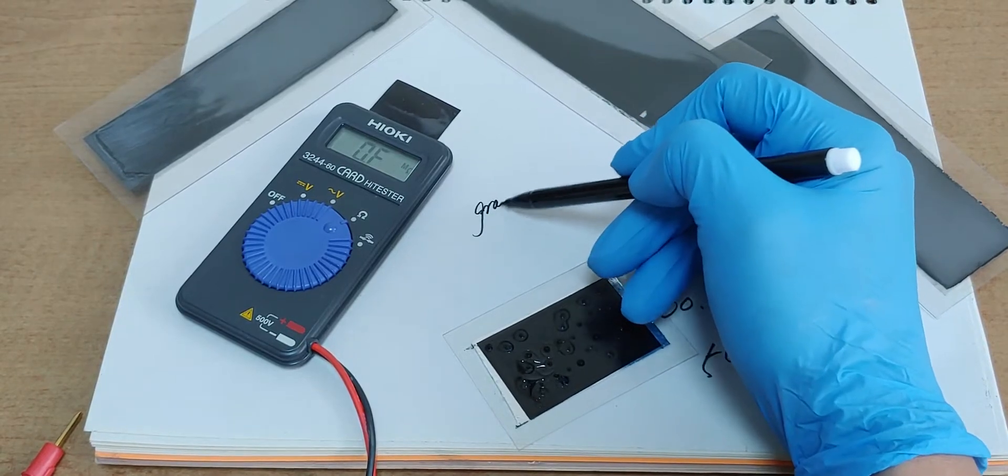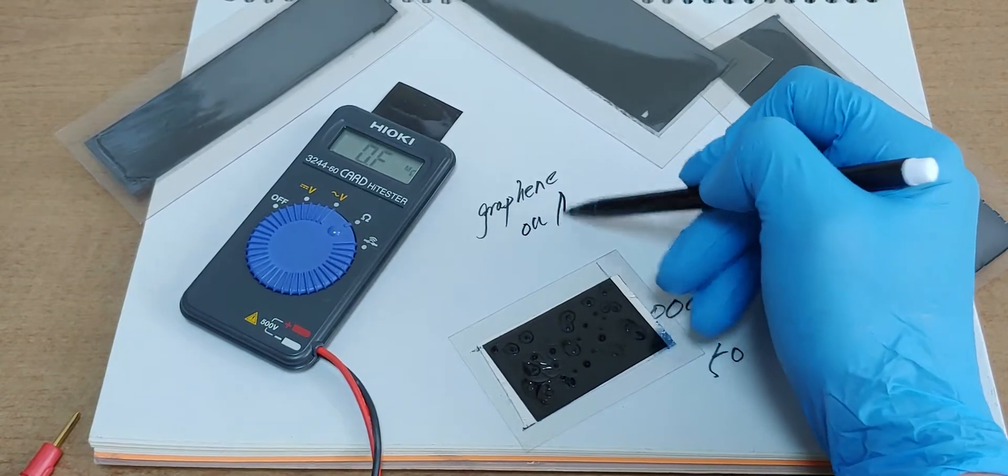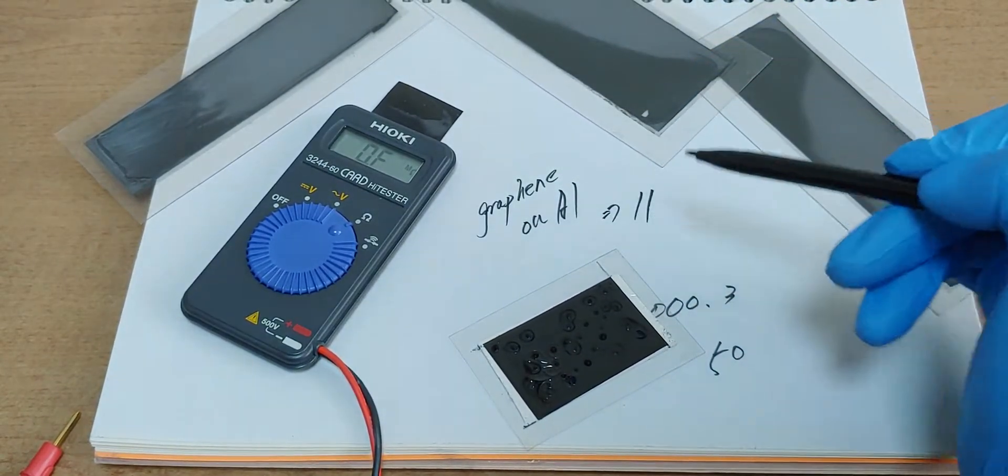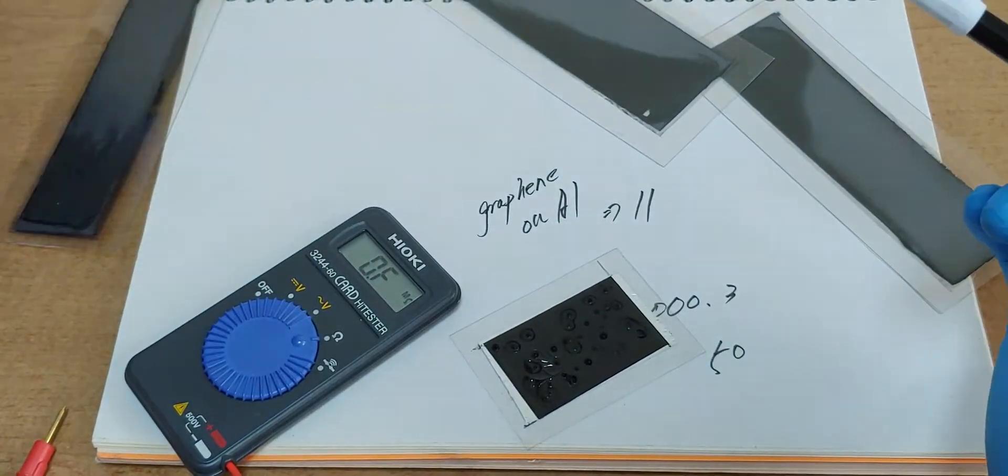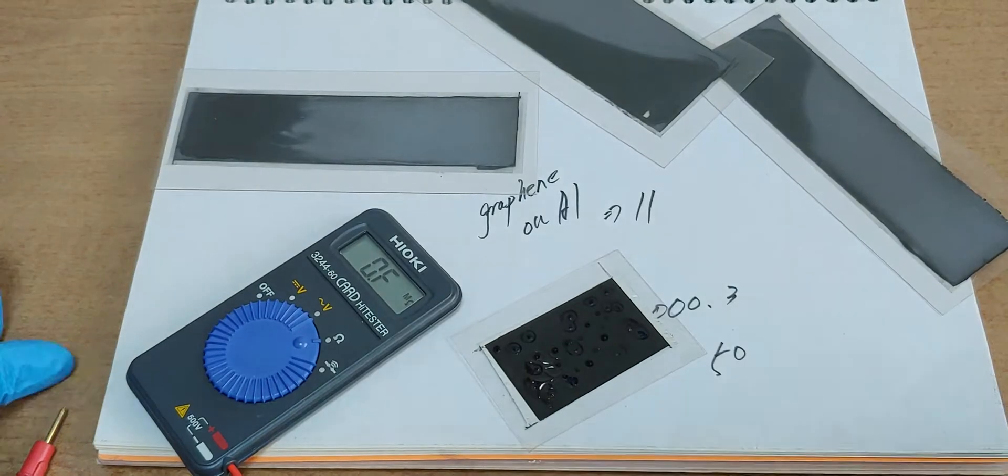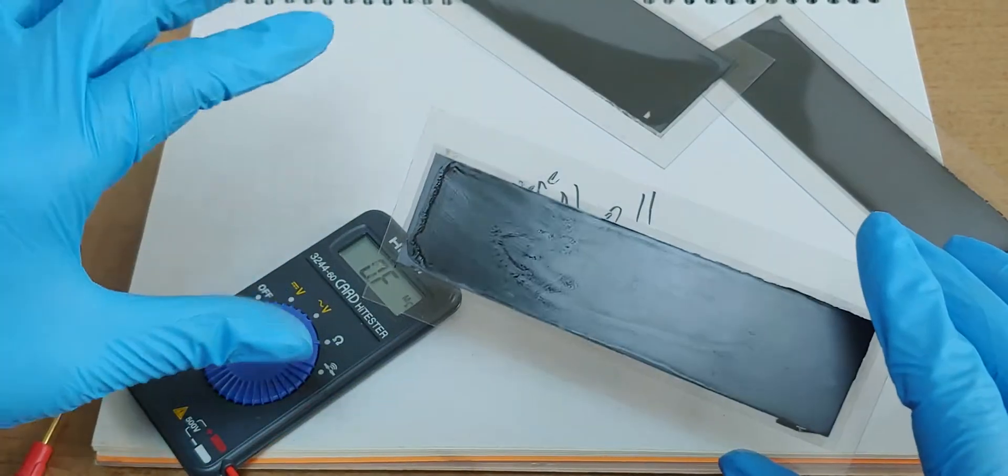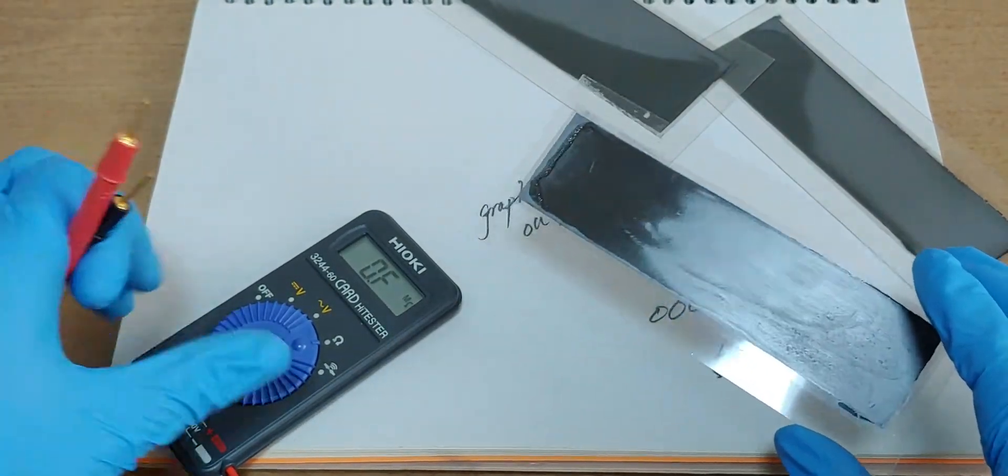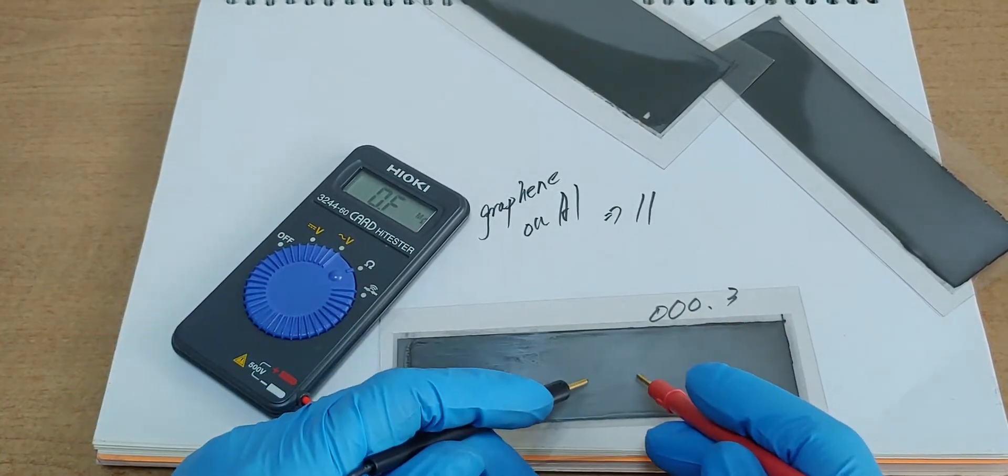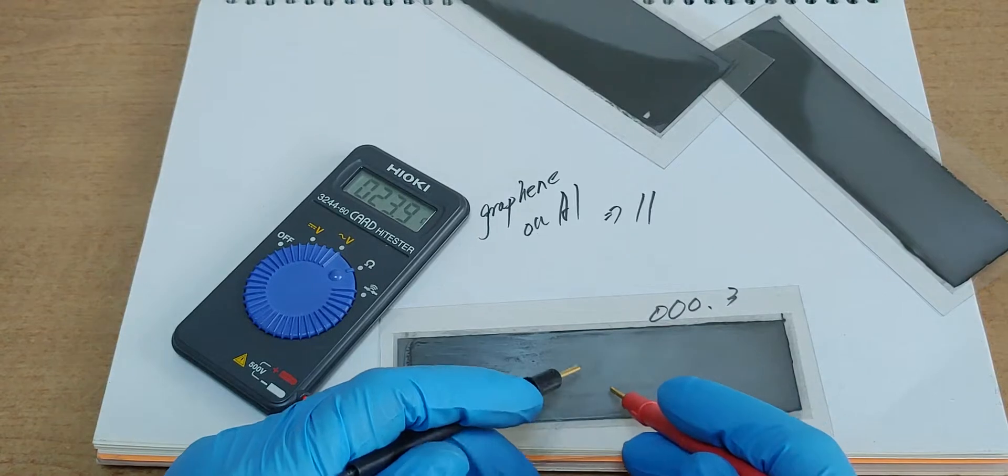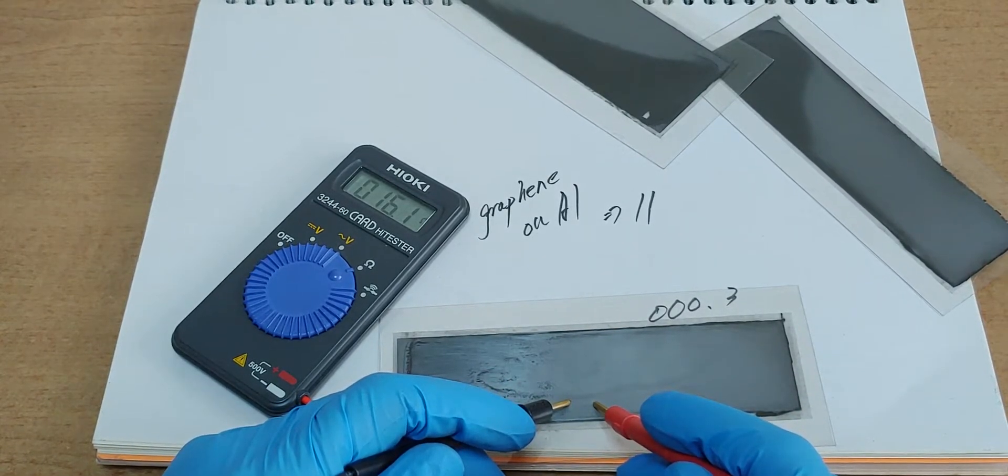Graphene. And this is also conductive ink sprayed onto the plastic. Let's see, its ohm is 24, 17, 16. Good.